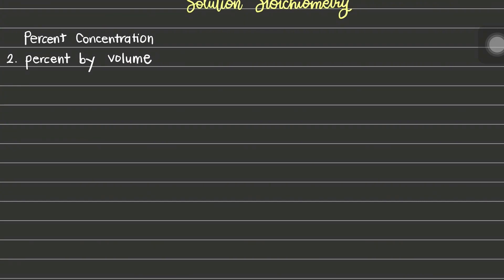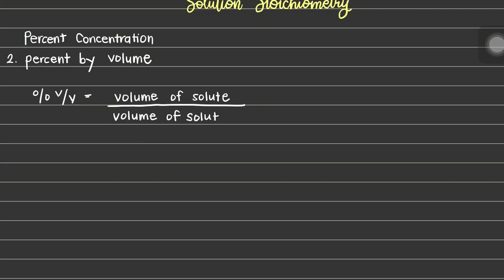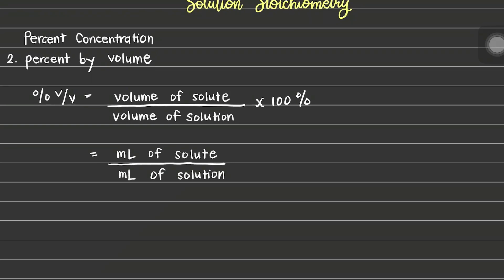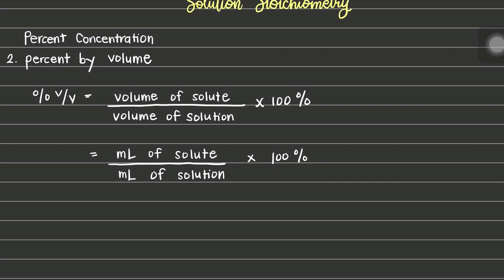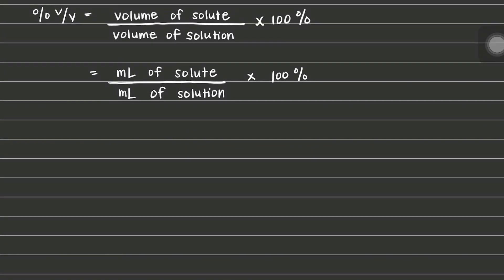The second type of percentage unit is percent by volume or volume-volume percent, abbreviated as percent V/V. This is used as a concentration unit in situations where the solute and solvent are both liquids or both gases. Solute and solution volumes must always be expressed in the same units when you use percent by volume, so we will be using mL for both our solute and solution.